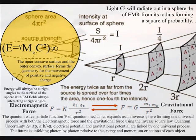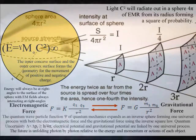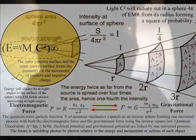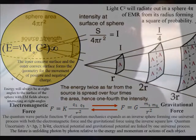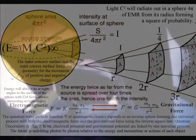Time is inverse with the quantum wave particle function, or probability function, of quantum mechanics, expanding out as an inverse sphere, forming one universal process with both the electromagnetic force and the gravitational force sharing the inverse square law.